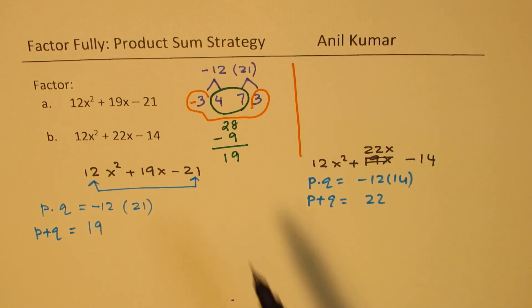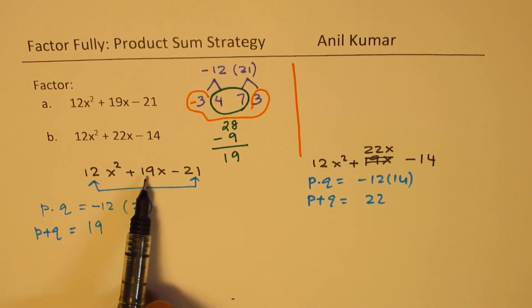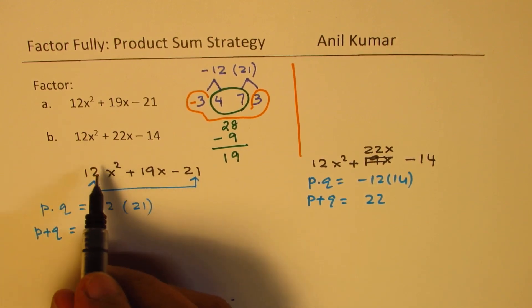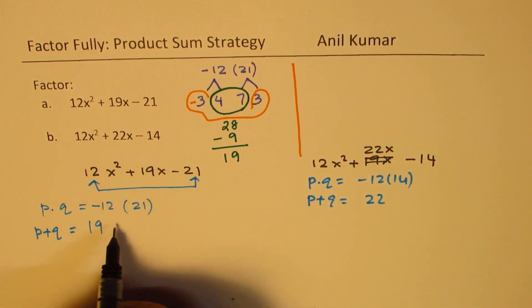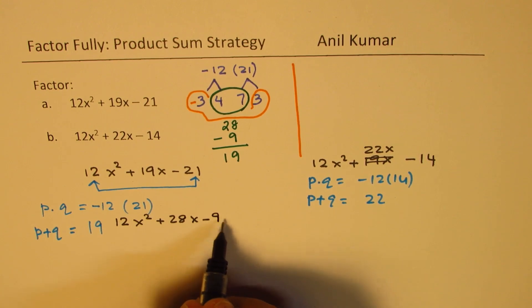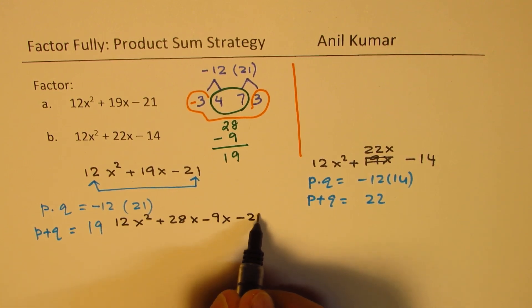Does it make sense to you? So that gives you the required number set. So we can now divide this 19 as a combination of 28 - 9.